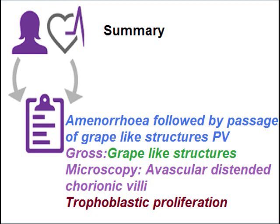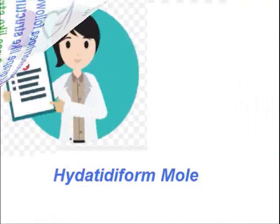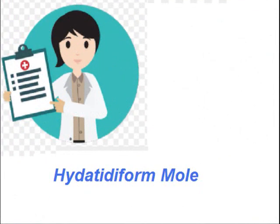To summarize: the clinical presentation is amenorrhea followed by passage of grape-like structures per vaginum. Grossly, there is diffuse grape-like appearance of the placenta with avascular villi and trophoblastic proliferation. The diagnosis is hydatidiform mole.